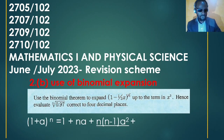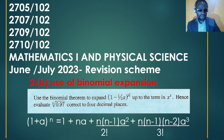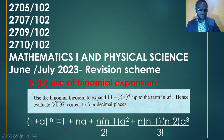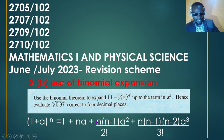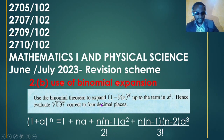We are going to apply the binomial expansion formula. It states that (1 + a) raised to m, or any power n, will follow this series: 1 + na + n(n−1)·a²/2! + n(n−1)(n−2)·a³/3!, and so on.